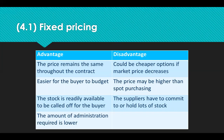Looking at that fixed pricing example, clearly the advantages are that the price will remain the same throughout the year, which makes it much easier for the buyer to budget. Stock is readily available to be called off by the buyer when needed, and there's a lot less admin costs because it's one order that covers a much larger quantity. But the downside is it could be cheaper if the market price decreases. The price might be slightly higher because the supplier doesn't know if there's any risk involved in giving a fixed price, and the supplier has to commit to holding lots of stock.